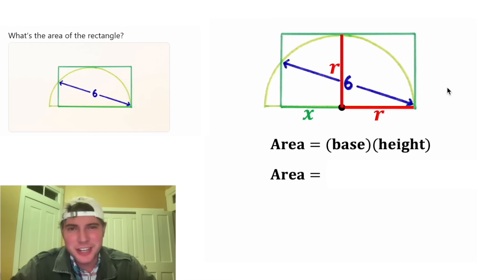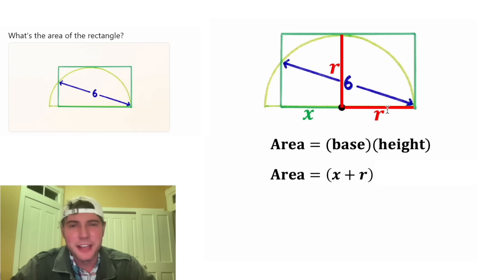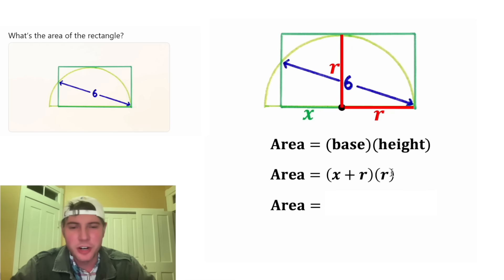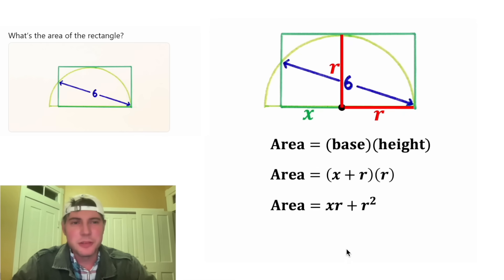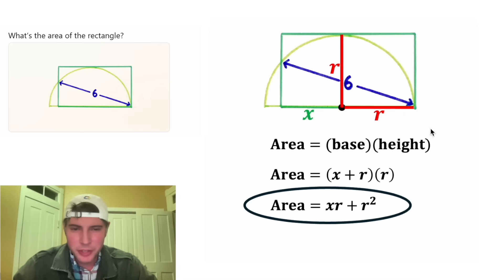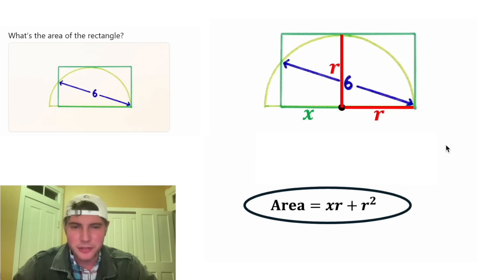Now we can express the area of the rectangle. The base is X plus R and the height is equal to R. Distributing that: X times R is XR, and R times R is R squared. So the area of our rectangle is XR plus R squared. This looks important — let's put an ellipse around it.